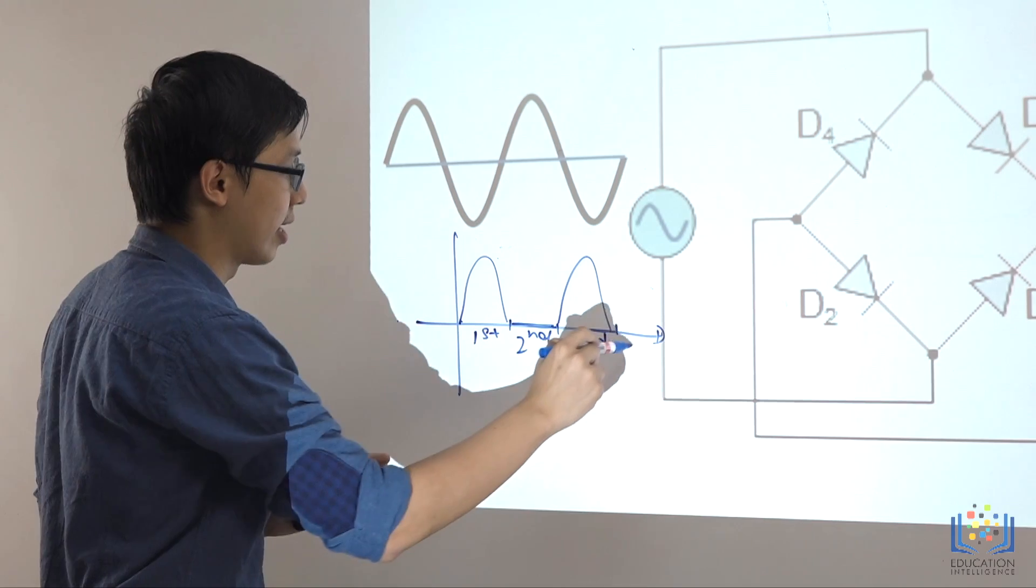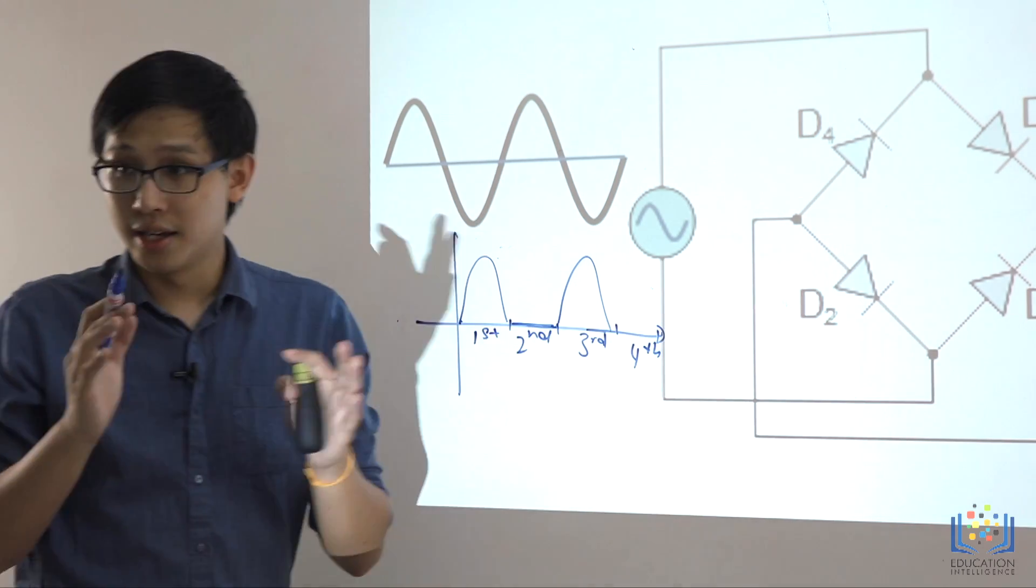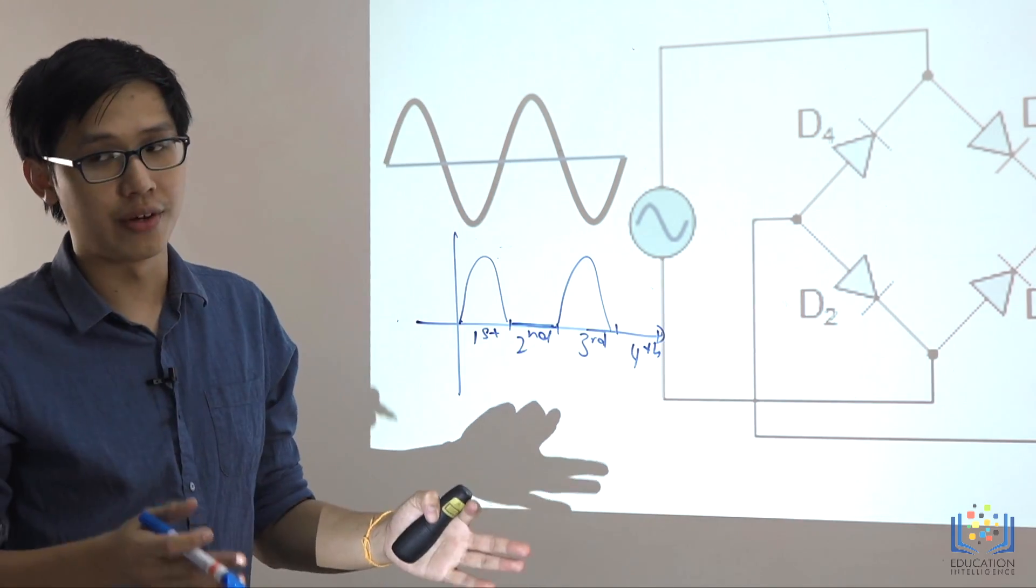But we don't have any reading for second and fourth because of the properties of a half-wave rectifier.